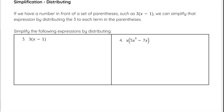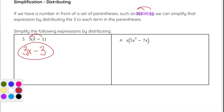Now let's talk about distributing. If we have a number in front of parentheses, such as 3 times the quantity x minus 1, we simplify by distributing the 3 to each term inside: 3 times x gives 3x, and 3 times negative 1 gives negative 3. So the simplified expression is 3x minus 3. Once distributed, we can drop the parentheses.